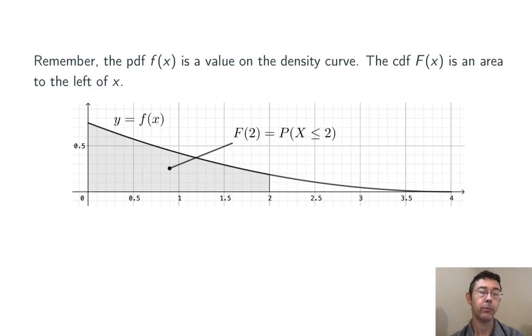I think a picture is helpful here. Here's the PDF of the same random variable we saw a moment ago, y equals little f of x. I've shaded the probability that x is less than or equal to 2. The accumulated probability for x equals 2. So, this is capital F of 2. The CDF at 2.